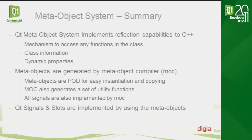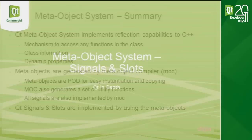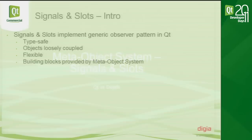Qt signal/slots are implemented using meta-objects. What are signal/slots? They basically implement the generic observer pattern for Qt. They are type-safe — no need to cast from void pointers as with function callbacks. They are loosely coupled, so you don't need to know much about the other object. They are flexible — you can have one-to-one, one-to-many, or many-to-many connections. The building blocks for signal/slots are provided by the meta-object system.